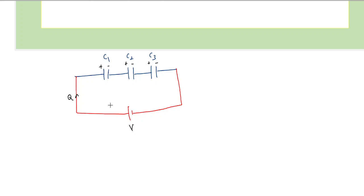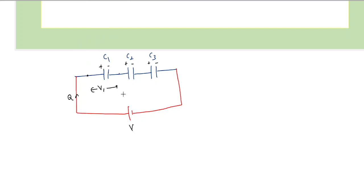As we saw in the previous lecture, the voltage divides across the capacitors. The voltage drop across the first capacitor we call V1 — if we put a voltmeter across it, it will read V1. Similarly, the drop across C2 is V2 and the drop across C3 is V3. So we have three capacitors with three individual voltage drops.